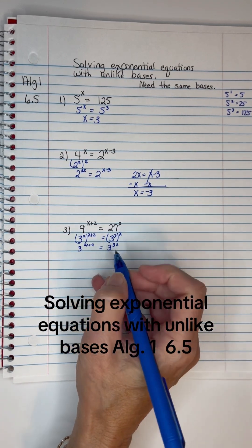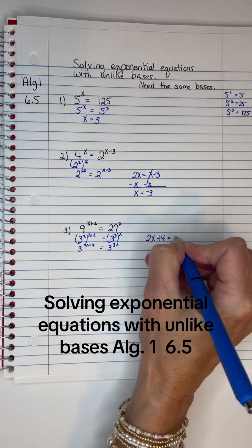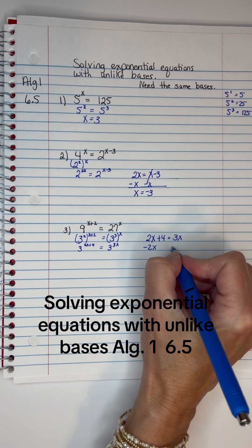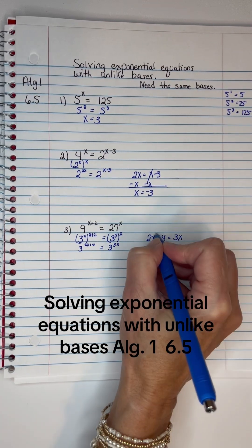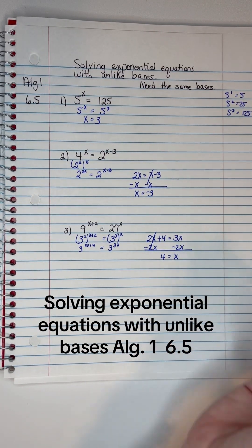Alright, so the bases are the same. I can set the exponents equal to each other – 2X plus 4 equals 3X. And then I want to get rid of this 2X, so that I can have the X's on the same side. And I have 4 equals X, and we're done.